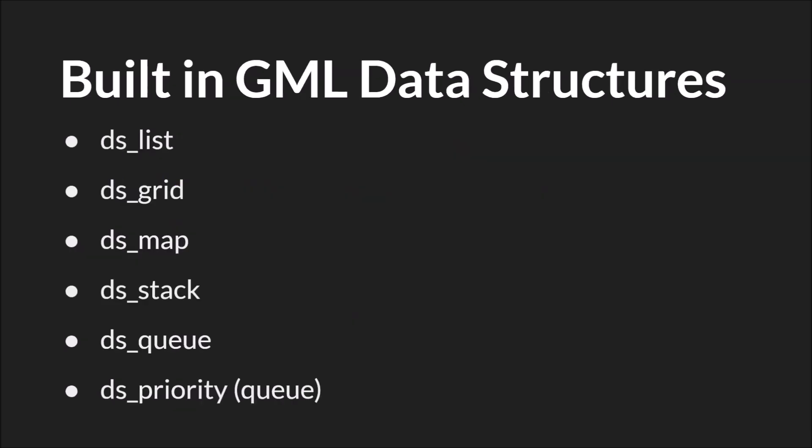There are six built-in data structures. They all start with the prefix DS. You have DSList, DSGrid, DSMap, DSStack, DSQueue, and DSPriorityQueue, which is just called DSPriority.